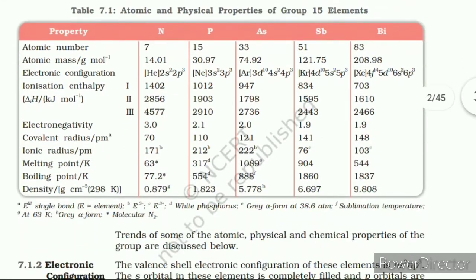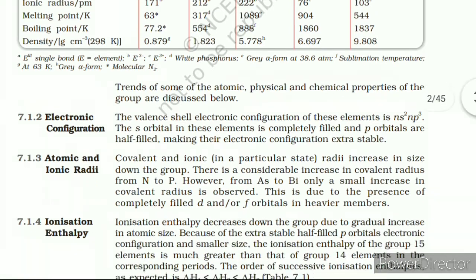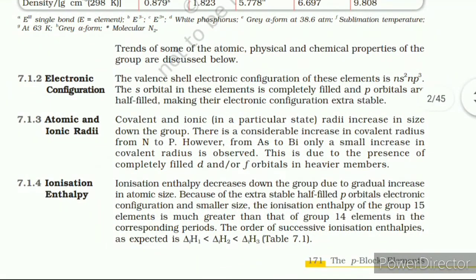7.1.2 Electronic Configuration. The valence shell electronic configuration of these elements is ns² np³. The s orbital in these elements is completely filled and the p orbitals are half-filled, making their electronic configuration extra stable.